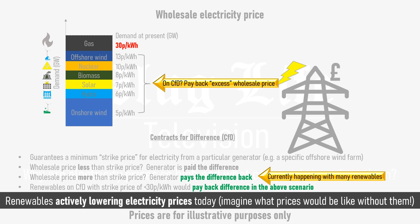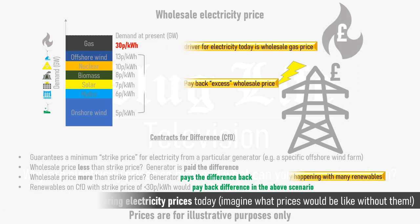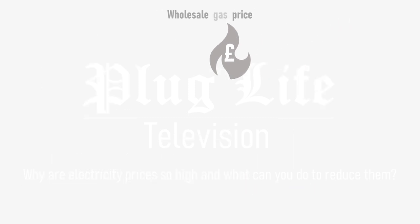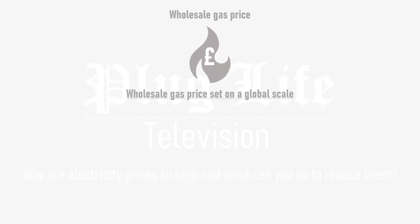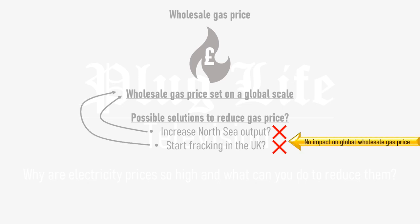However, the biggest cost driver for wholesale electricity prices today is the wholesale gas price. The wholesale gas price is set on a global scale, so it's vulnerable to fluctuations in output and supply from major producers. A couple of solutions have been touted recently to reduce UK gas prices. The first is to ramp up production in the North Sea, but this wouldn't work because gas prices are set on a global scale. The second is to start fracking, but again, this wouldn't work because gas prices are set on a global scale, and the output from the North Sea or fracking wouldn't be anywhere near enough to influence global supply and prices.